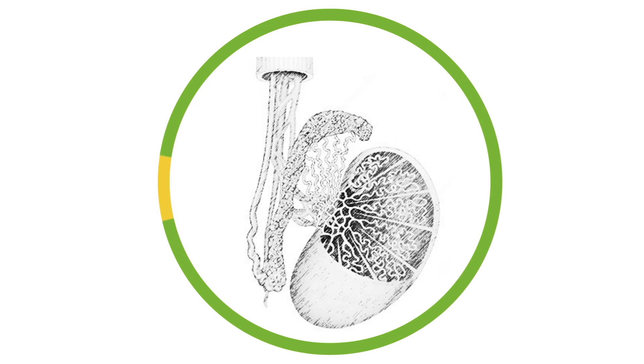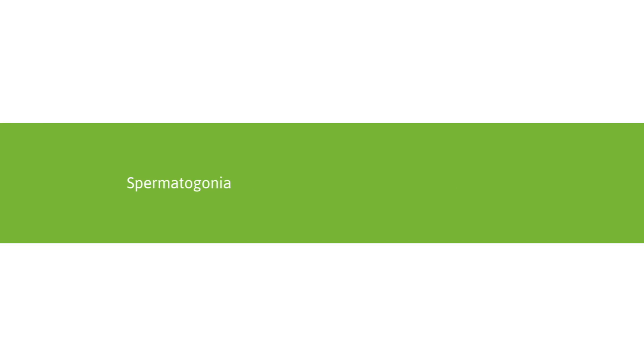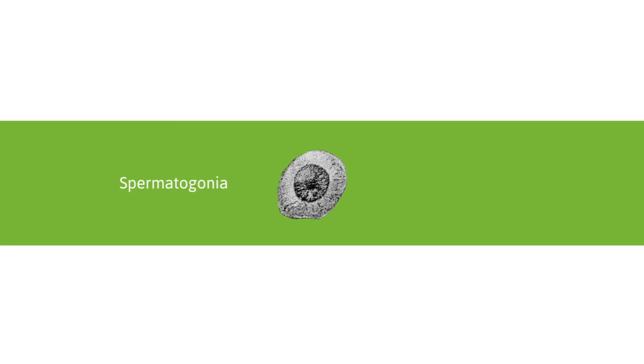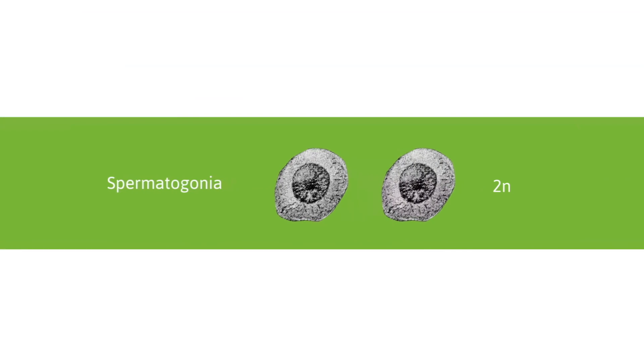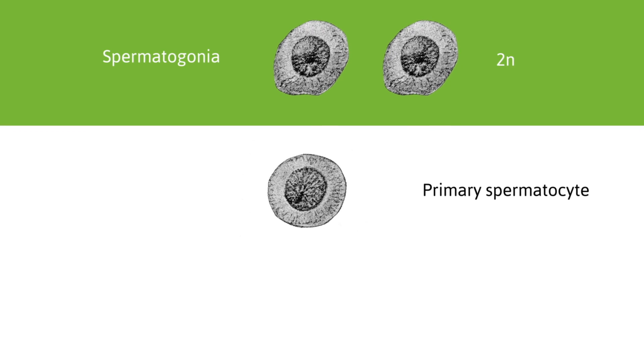From puberty to old age, these cells develop into sperm cells. Spermatogonia are the cells from which sperm cells arise. The spermatogonia divide by mitosis - one daughter cell remains a spermatogonia and the other becomes a primary spermatocyte.